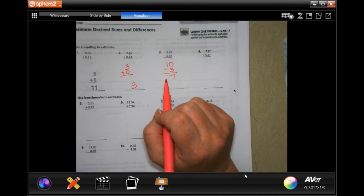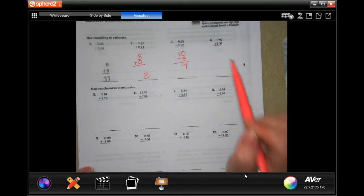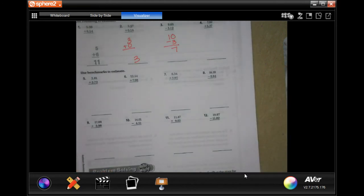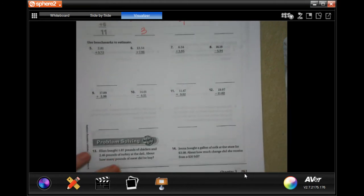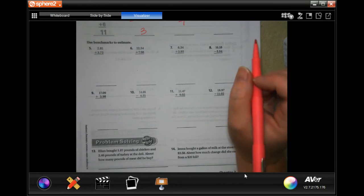Super easy, guys. Don't make it more complicated than it needs to be. Make sure that you're following your sign. So you guys take care of 4 through 12. Just round it to the nearest whole number and then subtract or add, depending on what sign it is.